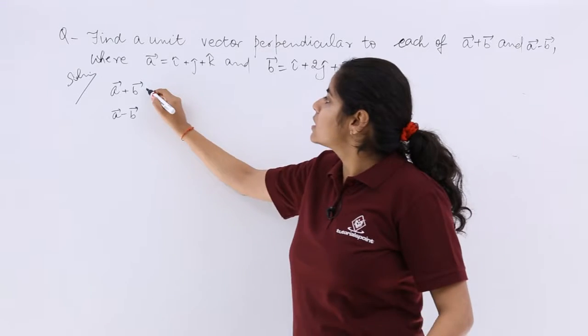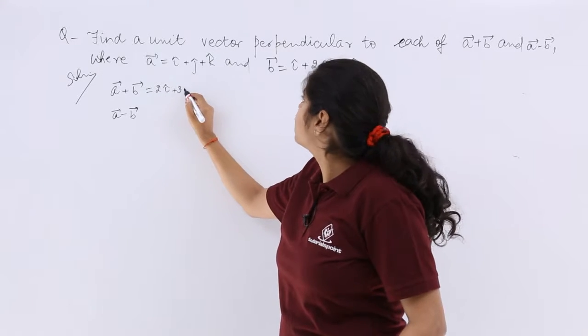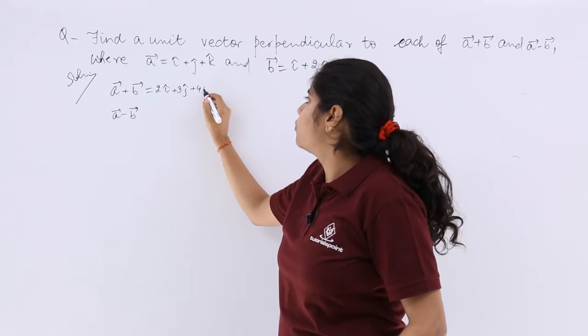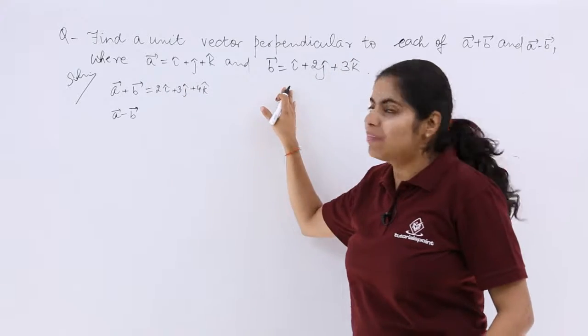So a plus b is 2i plus 3j plus 4k. What is a minus b?